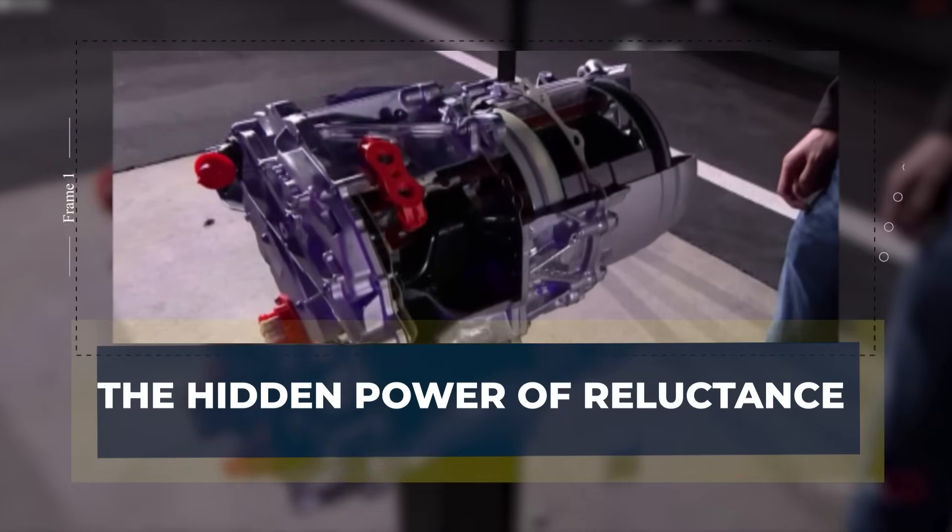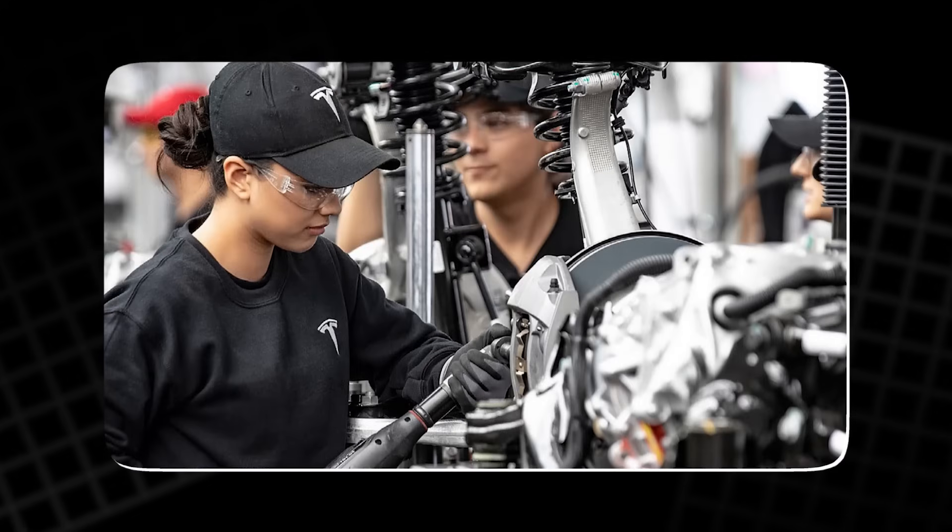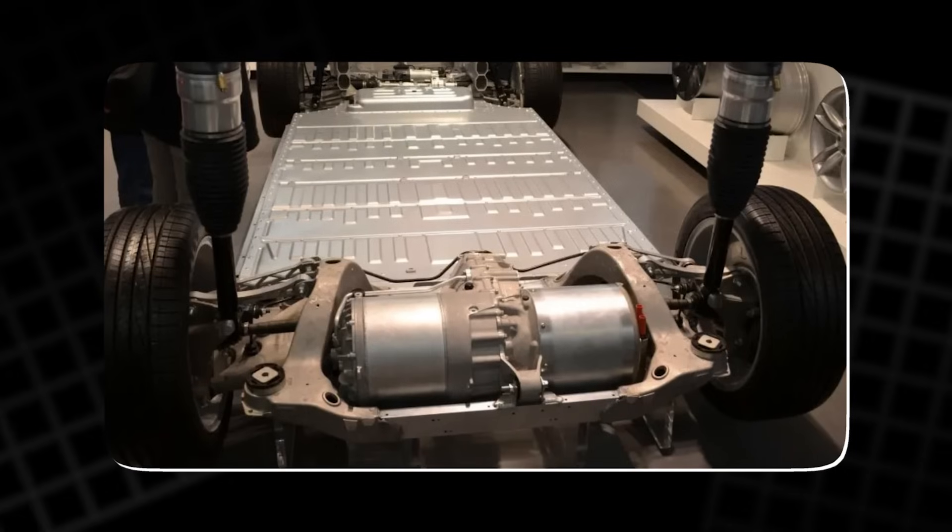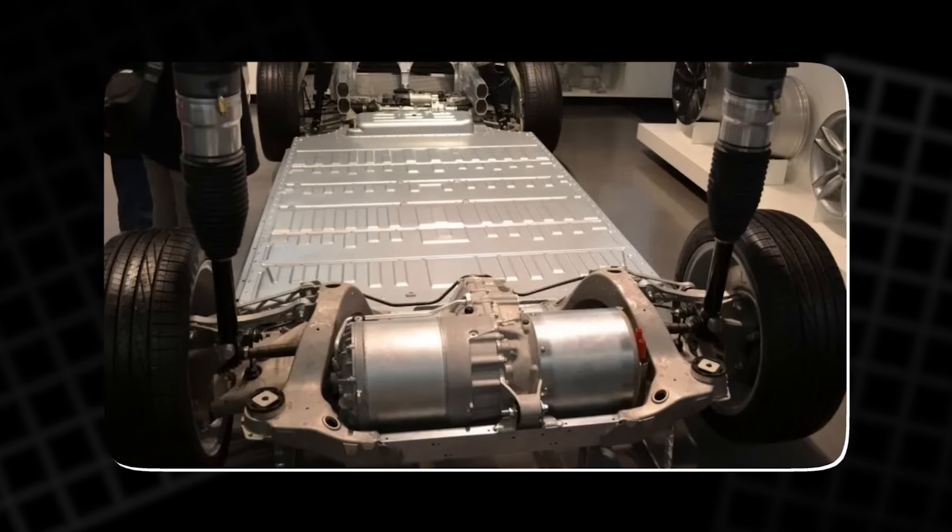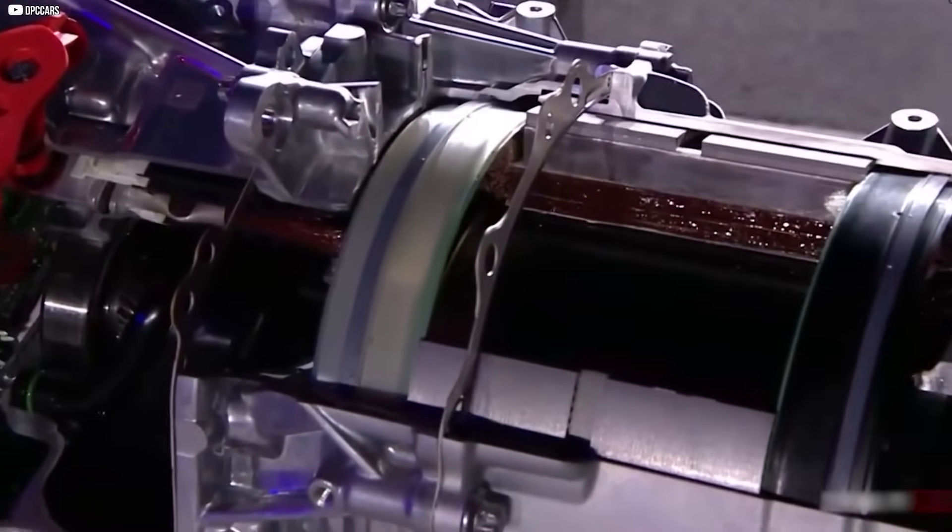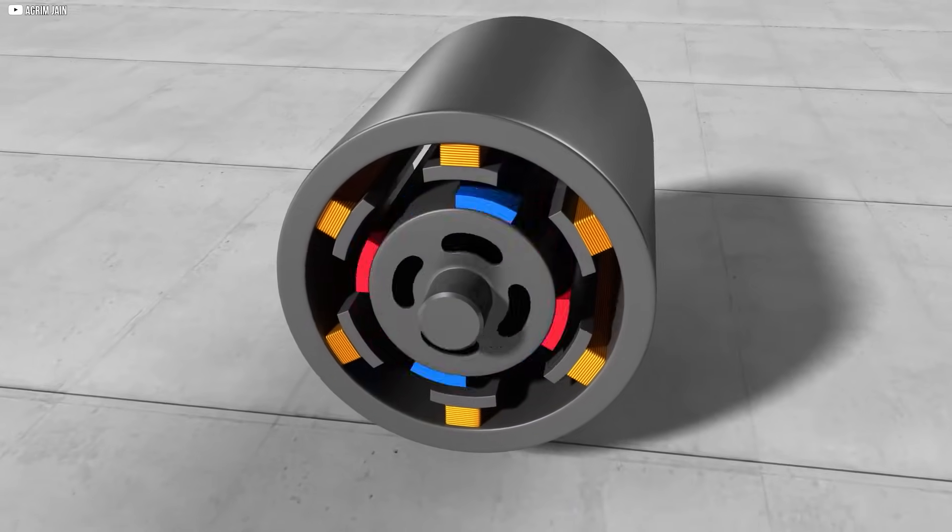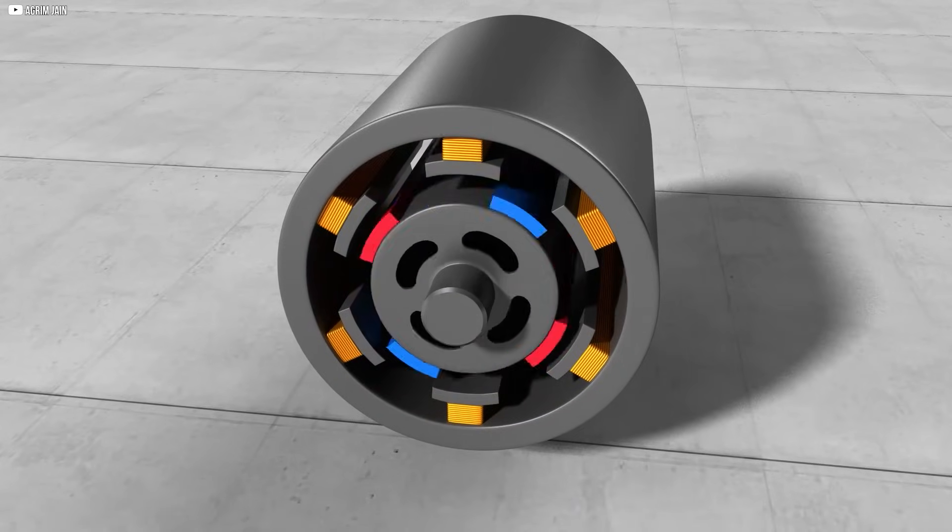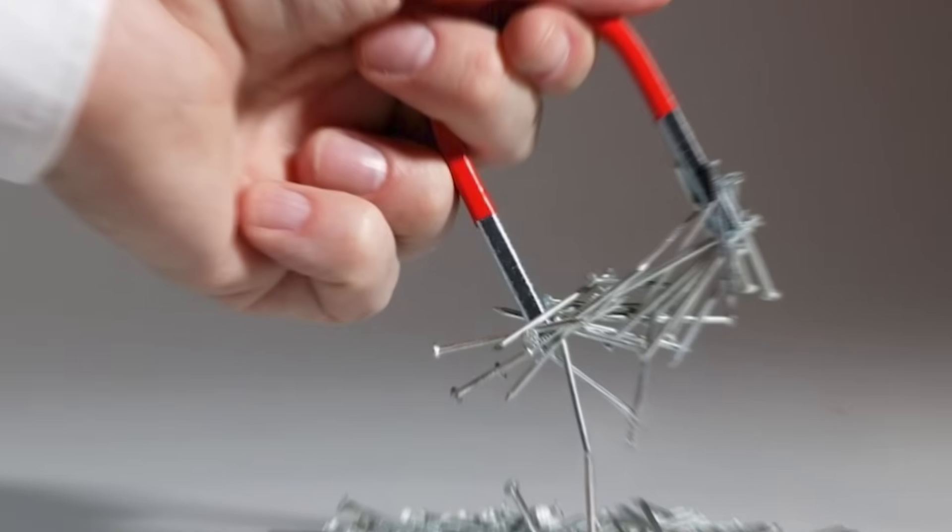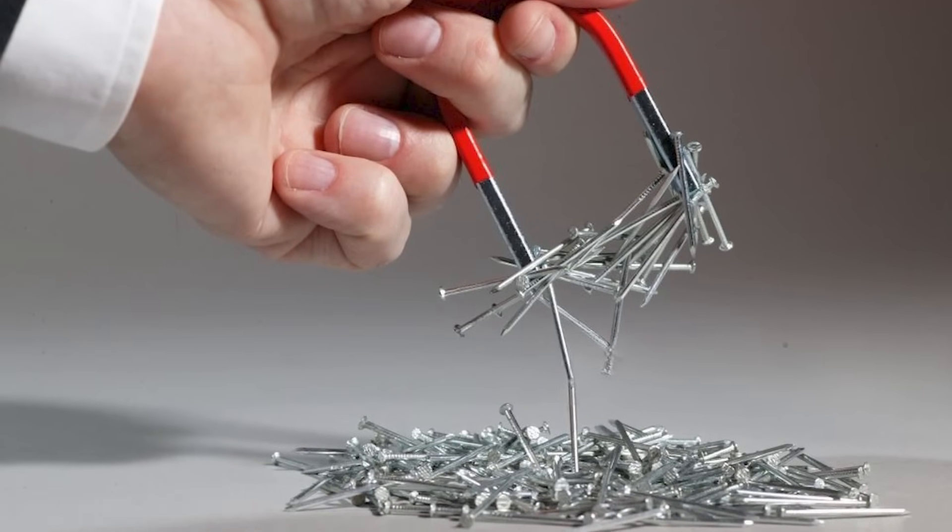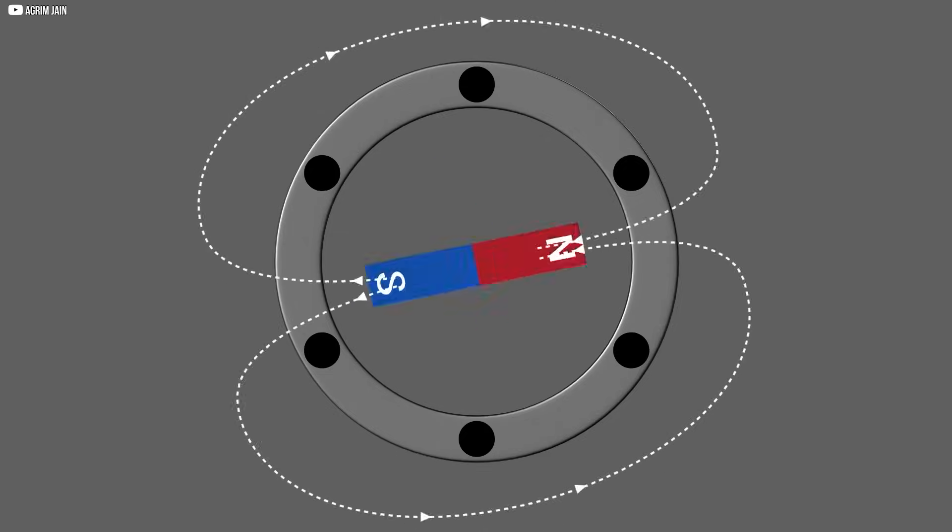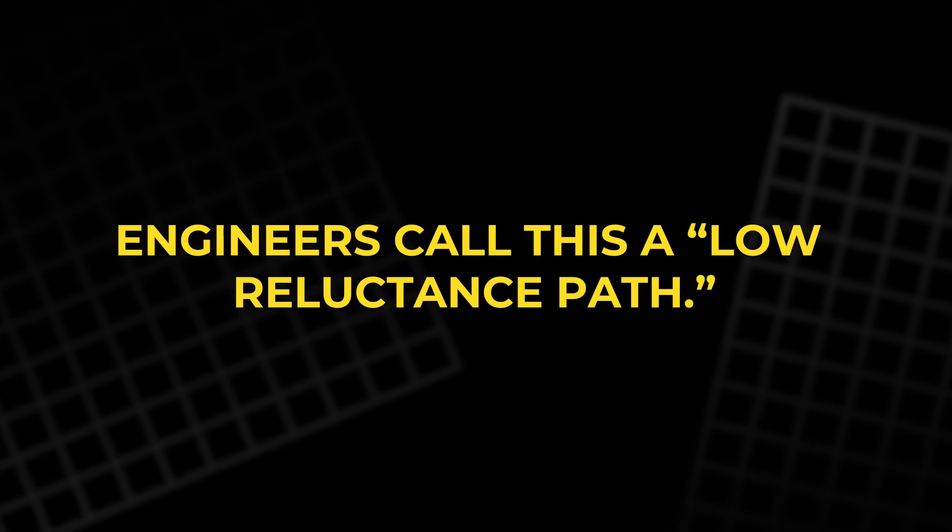To solve the puzzle, Tesla engineers turned their attention to something less talked about in the world of electric motors: reluctance. At first glance, the concept seems almost too simple. Reluctance is just a material's tendency to resist the flow of magnetic fields. Think about how an iron nail jumps toward a magnet. The nail prefers to stay where the magnetic field is strongest, because that's the path of least resistance for magnetic lines to travel. Engineers call this a low-reluctance path.